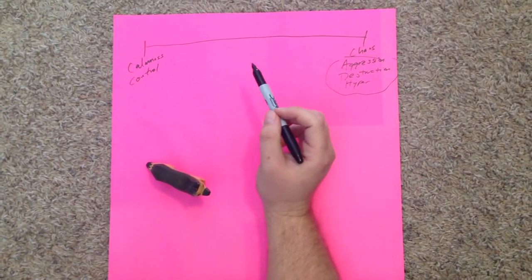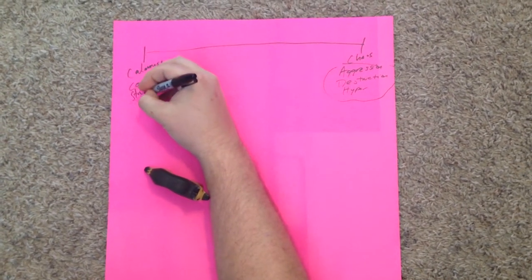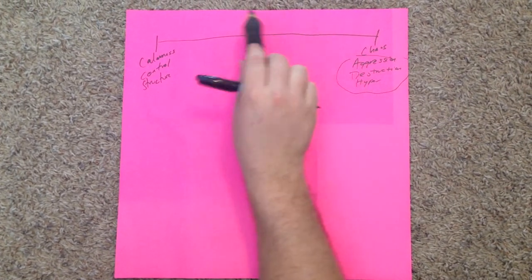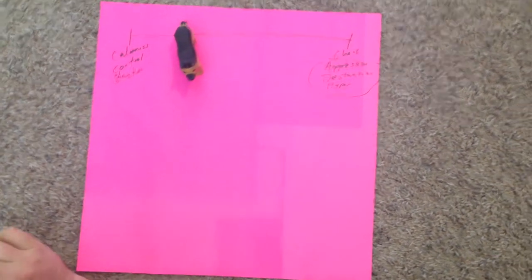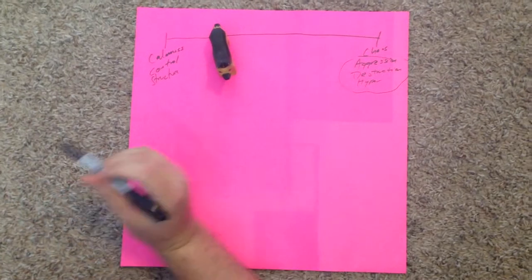Whereas the behaviors that they want - calmness, control, structure - live on this end of the spectrum. And so, where is your dog on the spectrum? Wherever your dog is is going to tell me exactly how obedient your dog is and the types of problems that you may or may not have with your dog.